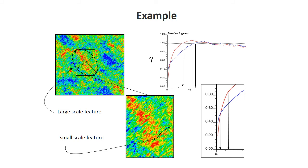Here's a slightly more complicated example. I have a data set and calculate the variogram in two directions: the 45-degree direction and the minus-45-degree direction, finding two variograms. The blue variogram is calculated in the minus-45-degree direction and the red one in the 45-degree direction.